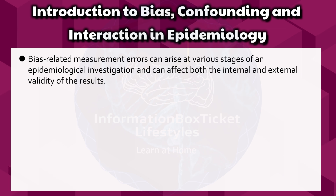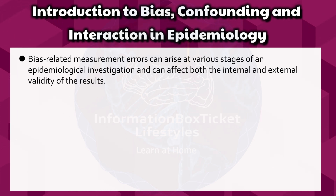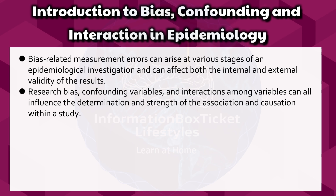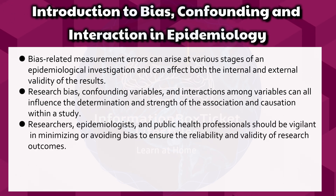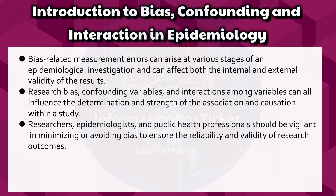These issues — random error, bias, and confounding — are particularly common in observational study designs. It is therefore essential to consider and address these factors during both the design and analysis phases to minimize their impact on the study. Bias-related measurement errors can arise at various stages of an epidemiological investigation and can affect both the internal and external validity of the results. Research bias, confounding variables, and interactions among variables can all influence the determination and strength of the association and causation within a study. Researchers, epidemiologists, and public health professionals should be vigilant in minimizing or avoiding bias to ensure the reliability and validity of research outcomes.